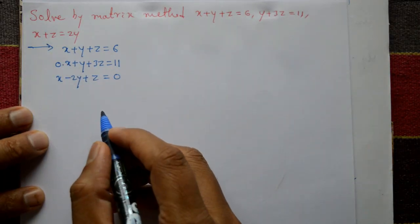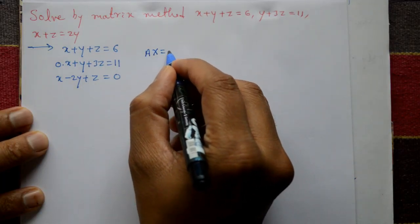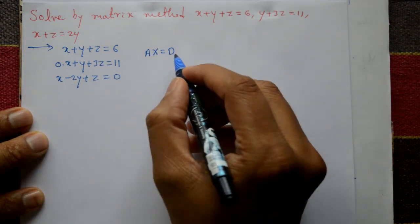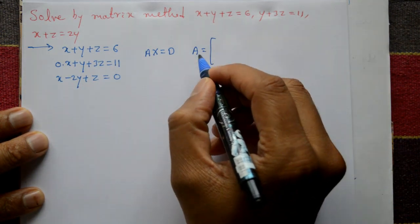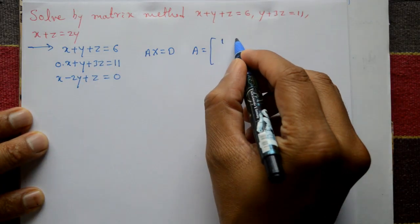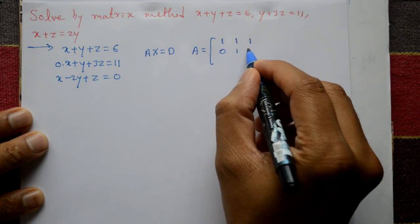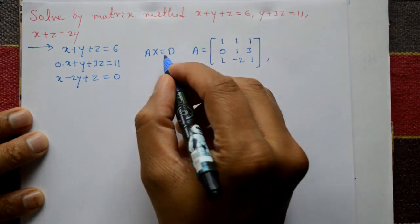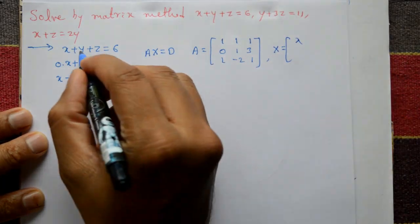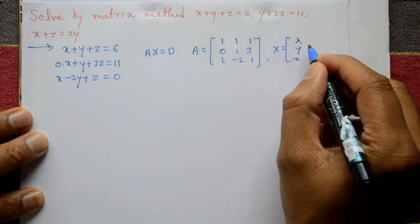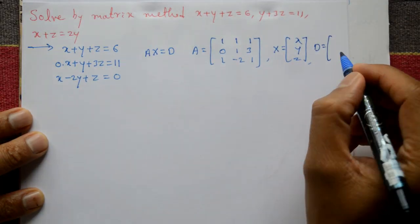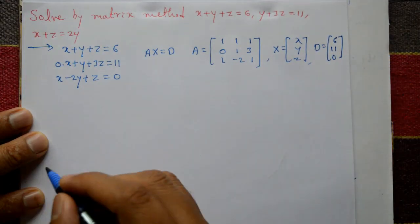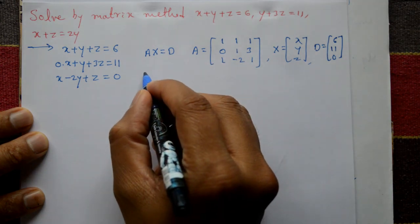This system is in the form AX = D. Taking the coefficients of x, y, z from all three equations, matrix A is equal to [1, 1, 1 / 0, 1, 3 / 1, -2, 1]. X is the variable matrix [x, y, z] and D is the right-hand side column matrix [6, 11, 0].